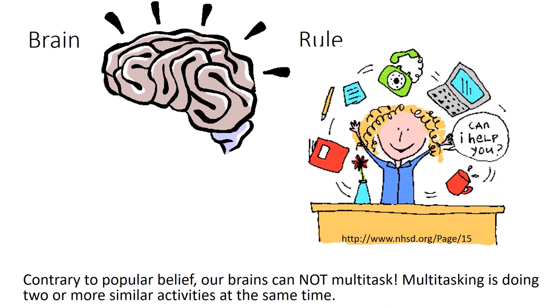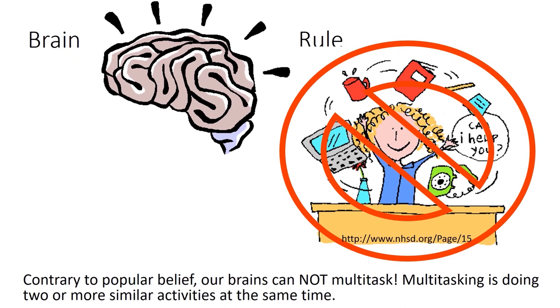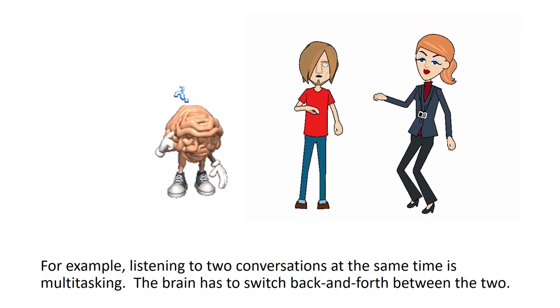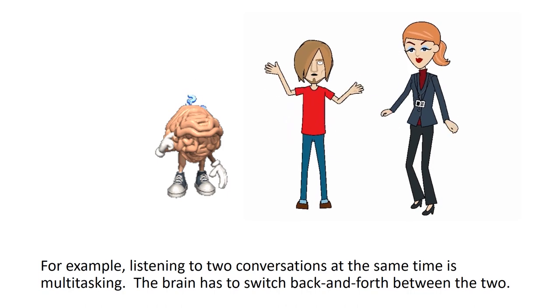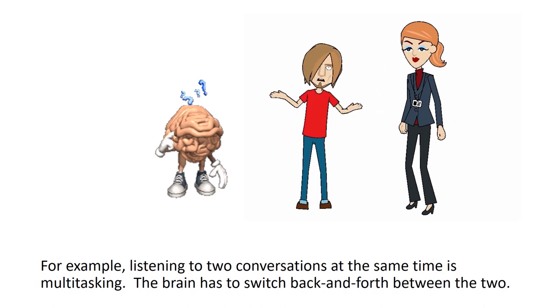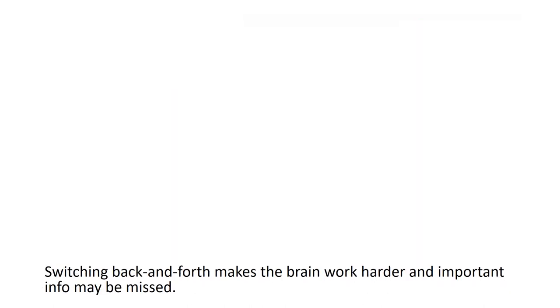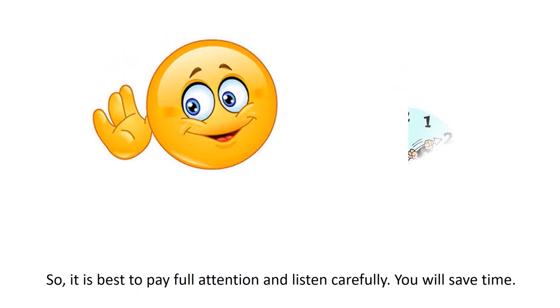Brain rule! Contrary to popular belief, our brains cannot multitask. Multitasking is doing two or more similar activities at the same time. For example, listening to two conversations at the same time is multitasking. The brain has to switch back and forth between the two. Switching back and forth makes the brain work harder and important information may be missed. So, it is best to pay full attention and listen carefully. You will save time.